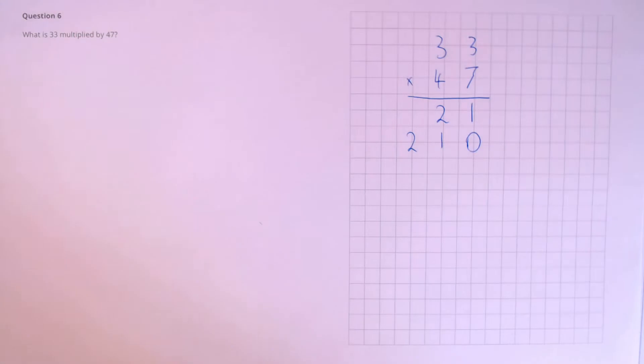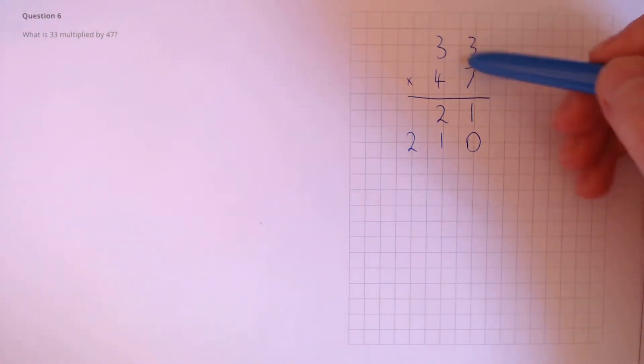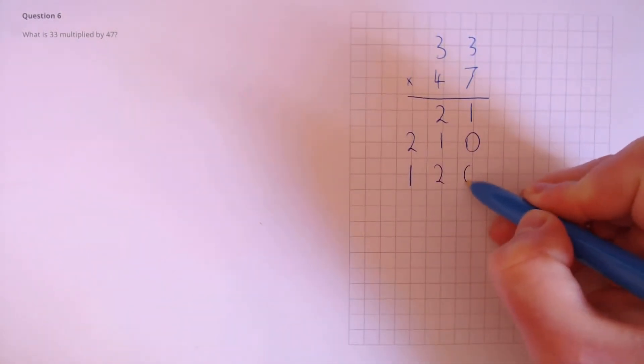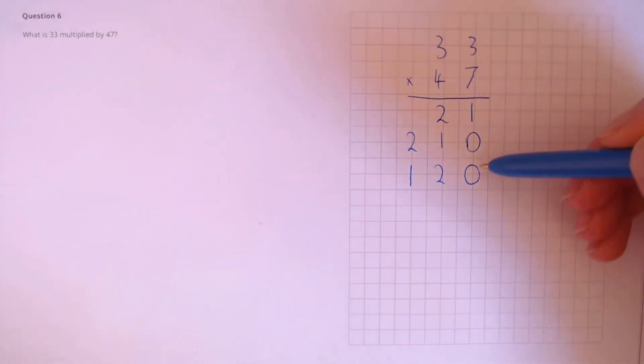Next, let's do the same for the units column here multiplied by the tens column here. So 3 times 4, that's 12. And because we've got a tens column, there's an extra zero.